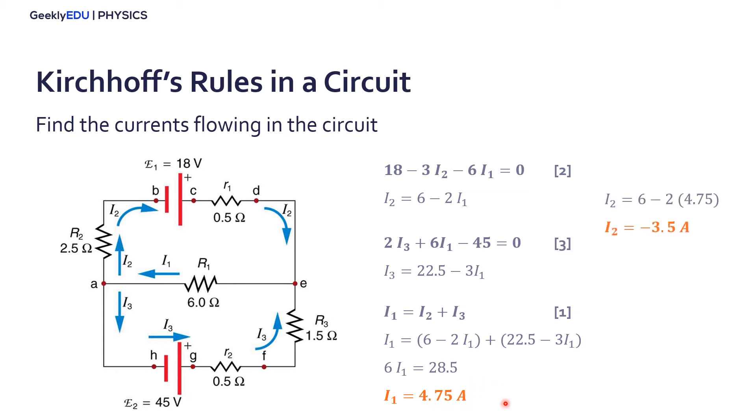Now that we have I1, we can go back in equation number two to find I2, negative 3.5 A, and in equation number three to find I3 equals 8.25 A.